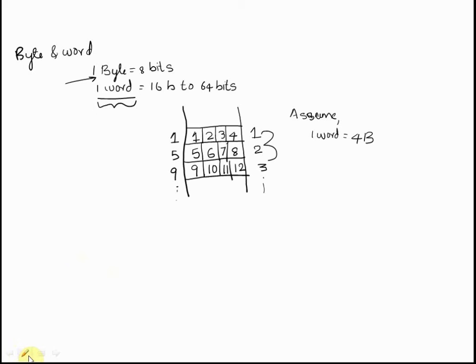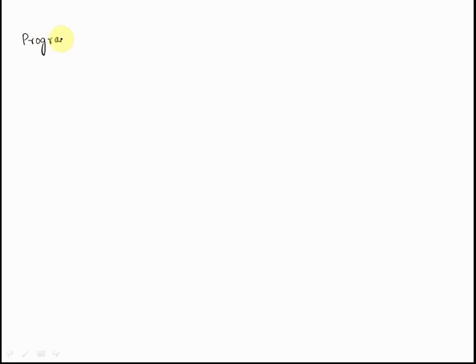Next we will see two special purpose registers in a processor. The first one is the program counter. A program counter is a register that, as the name itself says, keeps track of the program. A program has several instructions.